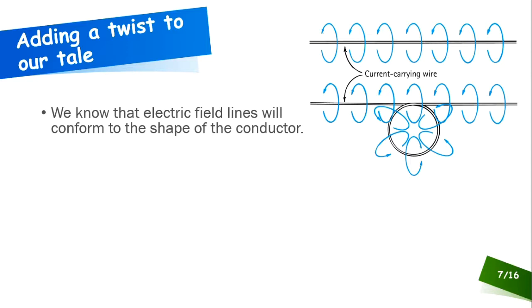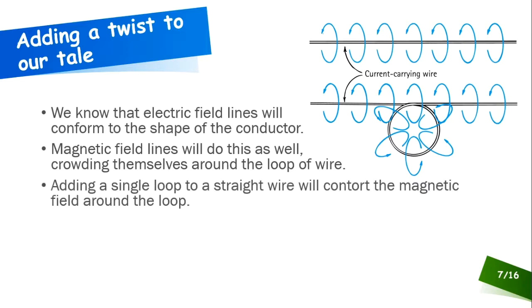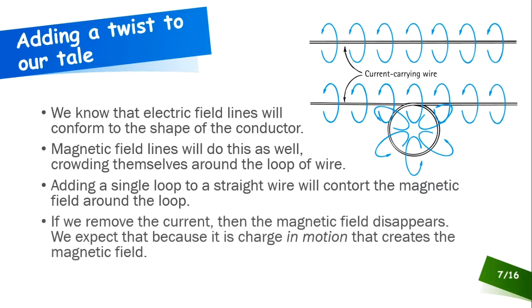Let's add a little twist here to our tale. If we take that wire and we put a loop in it, we know that the electric field lines are going to conform to the shape of the conductor. Magnetic field lines are going to do exactly the same thing. They're going to crowd themselves in loops around that loop in the wire. If we have a single loop in the wire, then the magnetic field is going to conform around that loop. Once we take the current away, the magnetic field disappears because it's the motion of the current that produces the magnetic field and not the charge itself.